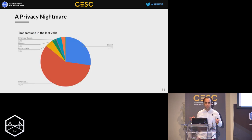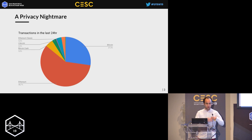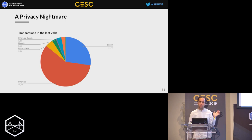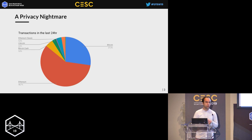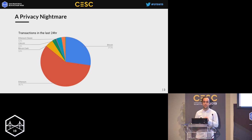If we think of this whole industry as a whole, on an average day in 2019 Q3 there were 1 million transactions settled. More than half of the transactions were settled on Ethereum, one quarter on Bitcoin. On this pie chart you don't even see any privacy coins — you cannot even see the half percent of Monero and the 0.23% of Zcash.